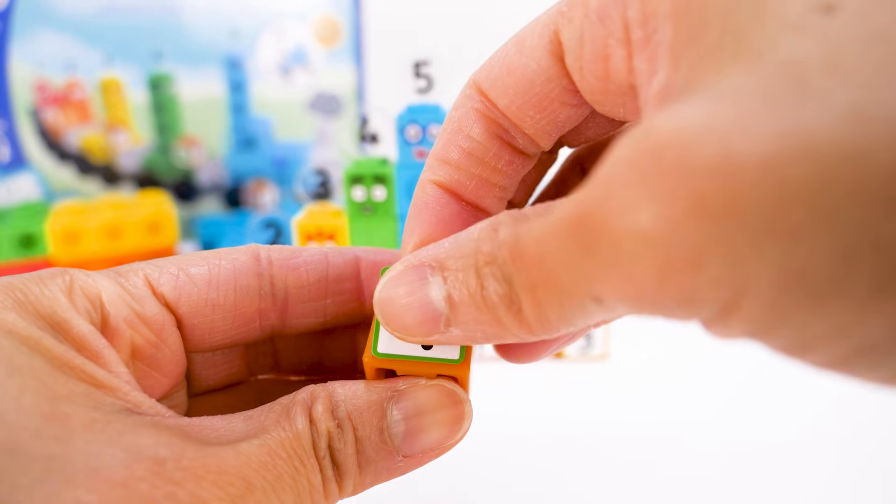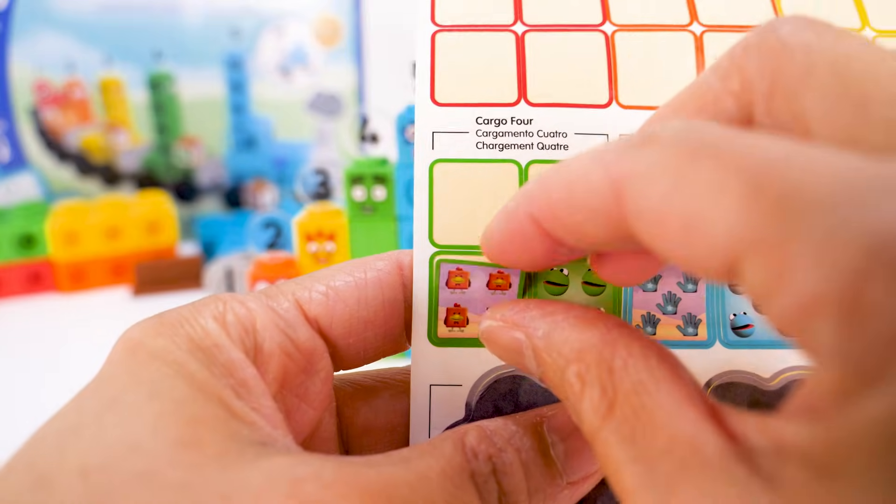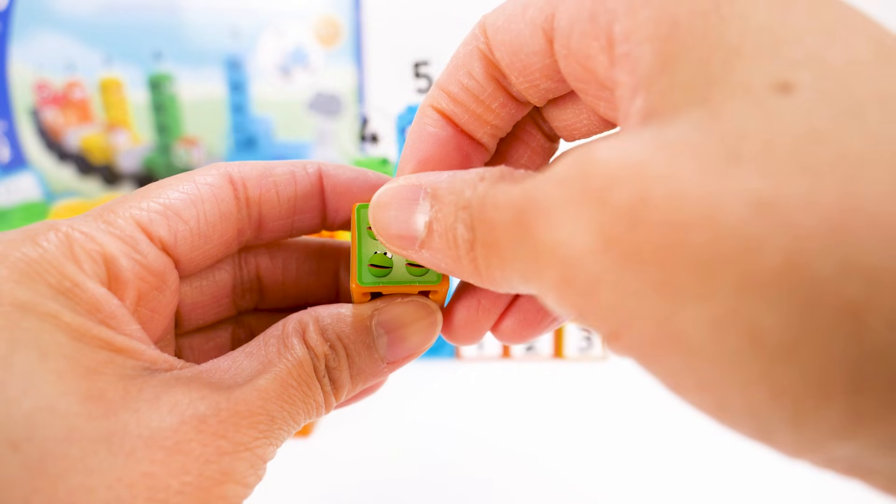Cargo 4 has the number 4, a sticker with a green square, four chickens, and four green number blocks.